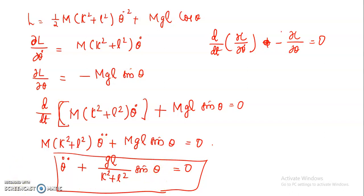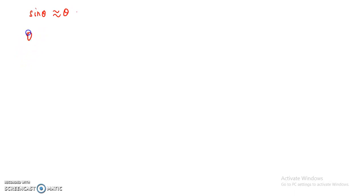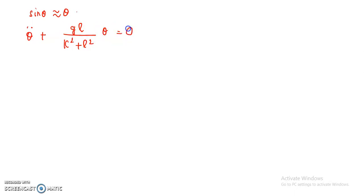Now, if we consider small angle oscillations, we can take sin theta approximately equal to theta. Then the equation of motion becomes theta-double-dot plus GL/(K² + L²) times theta equals zero. This is the equation of motion for small angle oscillations of a compound pendulum.